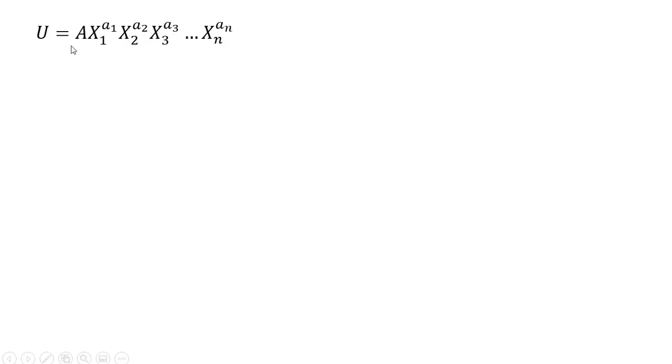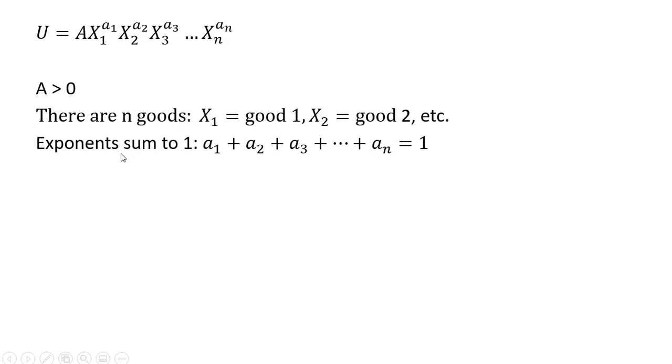So here is our n-good Cobb-Douglas utility function: good 1, good 2, good 3, all the way up to good n. Uppercase A is greater than 0. There are n goods. The exponents on the goods all sum to 1.